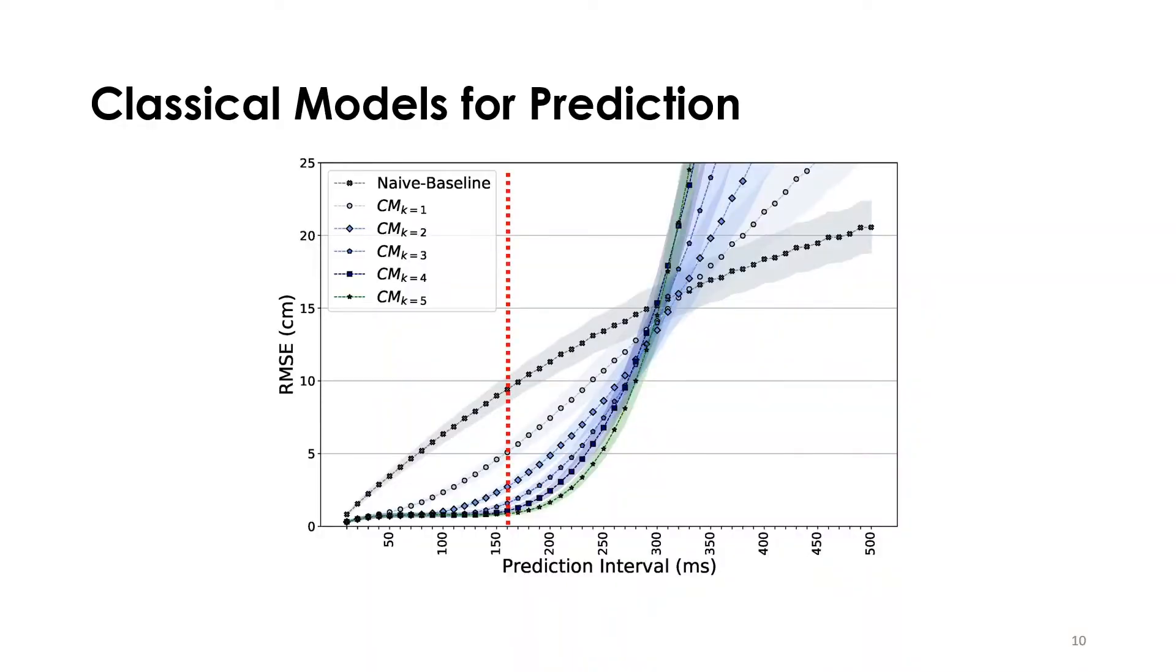We first tested our data with classical kinematics models. But as seen in this graph, in the classical models, prediction accuracy decreased rapidly after time exceeded 160 milliseconds.